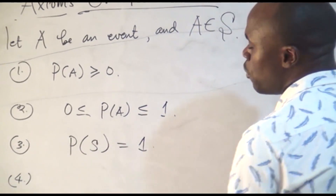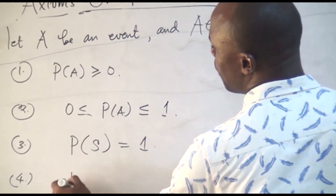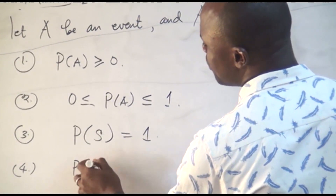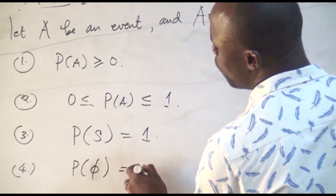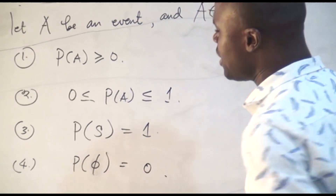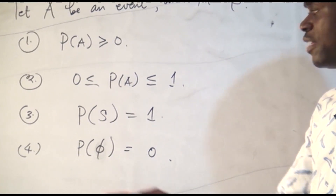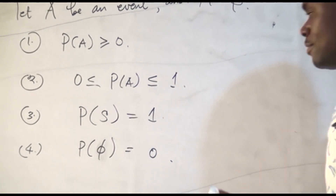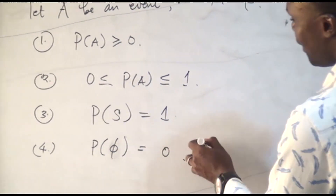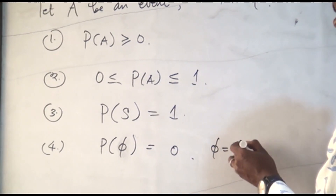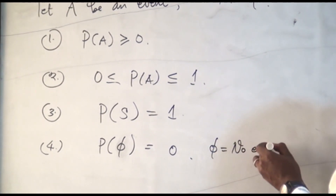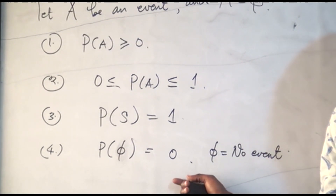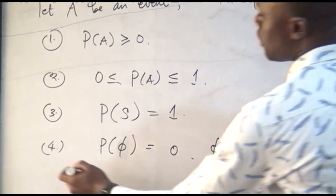Another axiom we must know is that the probability of an empty set is equal to zero. That means the probability of no event occurring is zero. This represents no event — that is what that means.